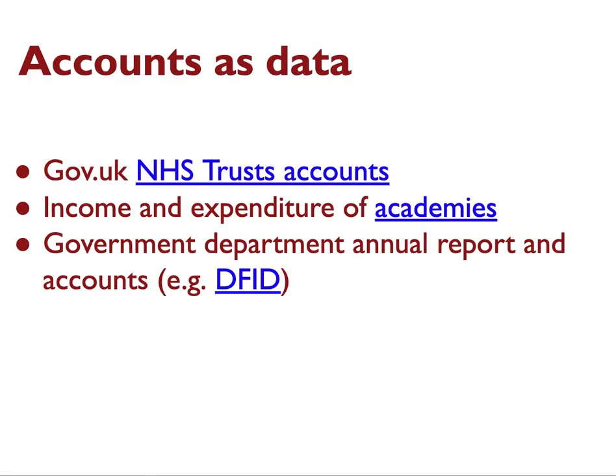Another tip for finding stories in accounts is to look for accounts that are already published as spreadsheet data. NHS trusts, for example, publish their accounts online as spreadsheets, as do schools, academies, and different government departments. The fact that they're already in spreadsheets makes it easier to make calculations, compare different organisations with each other, and often there is a much more detailed breakdown of what the money has been spent on and where it's coming from.